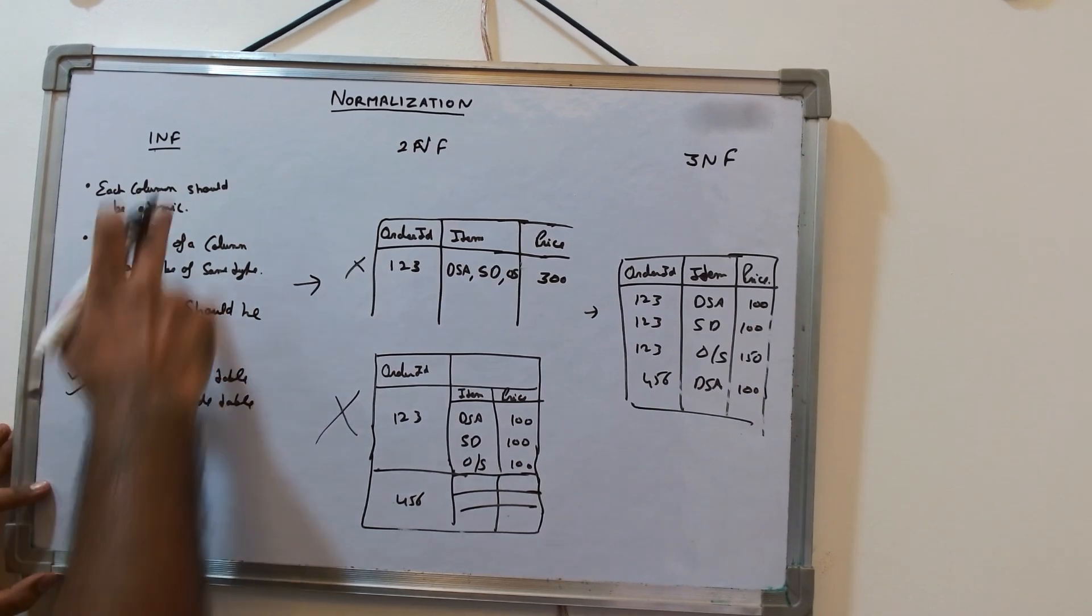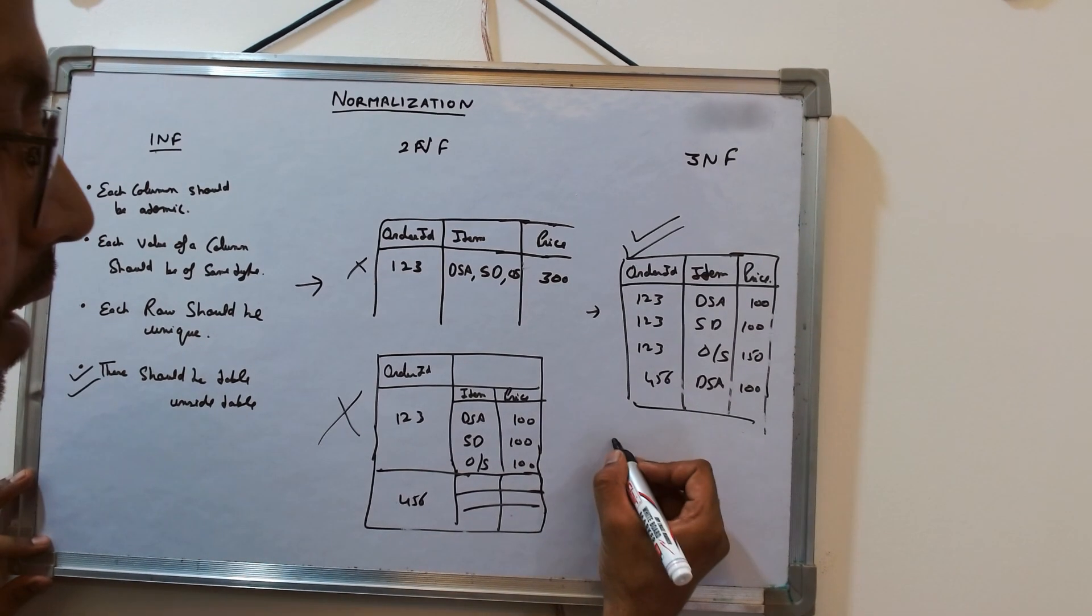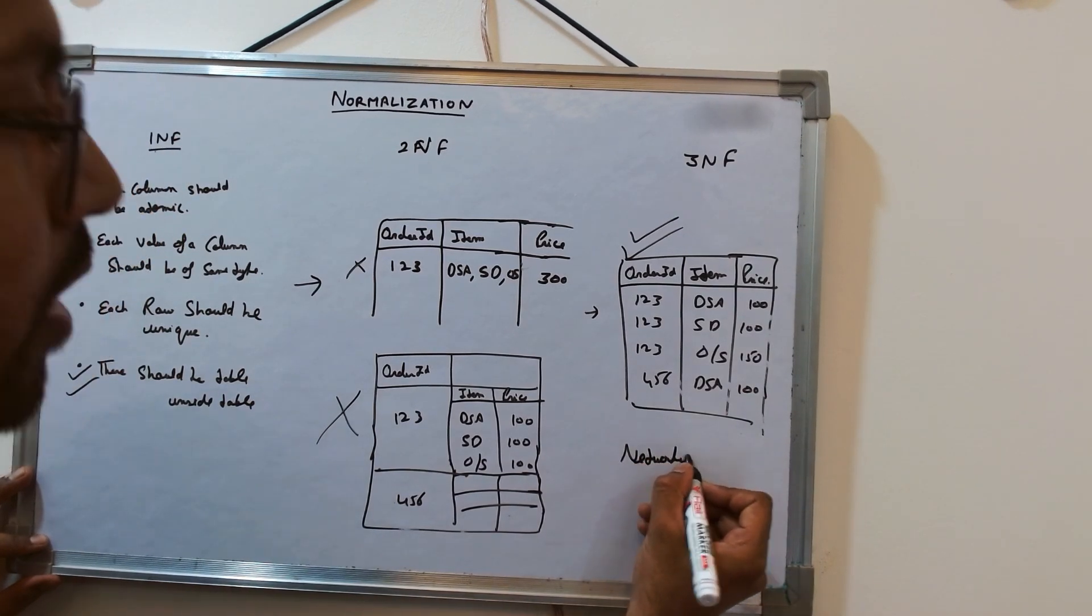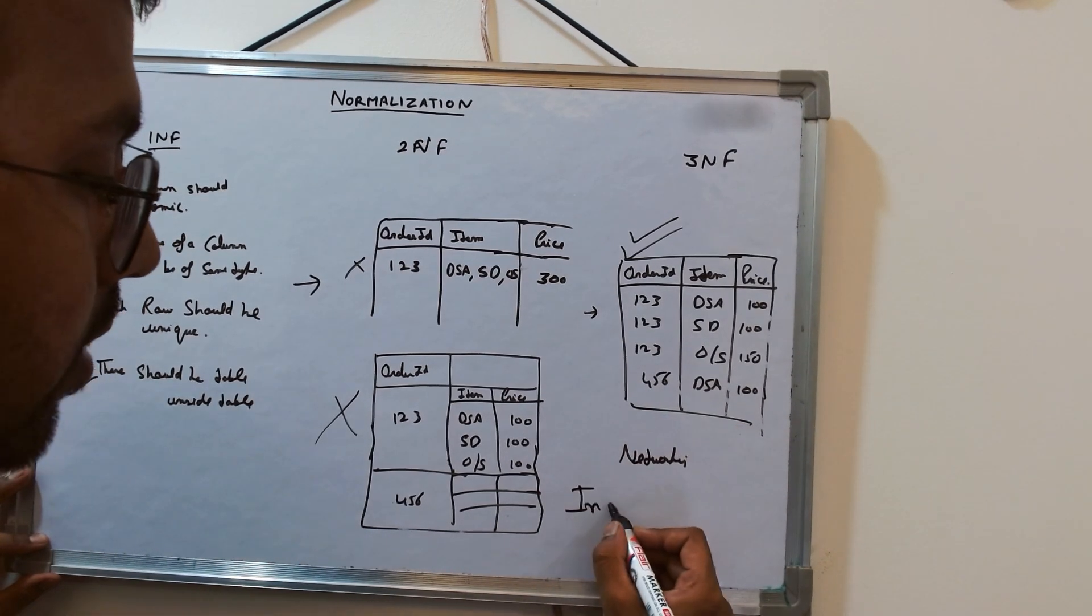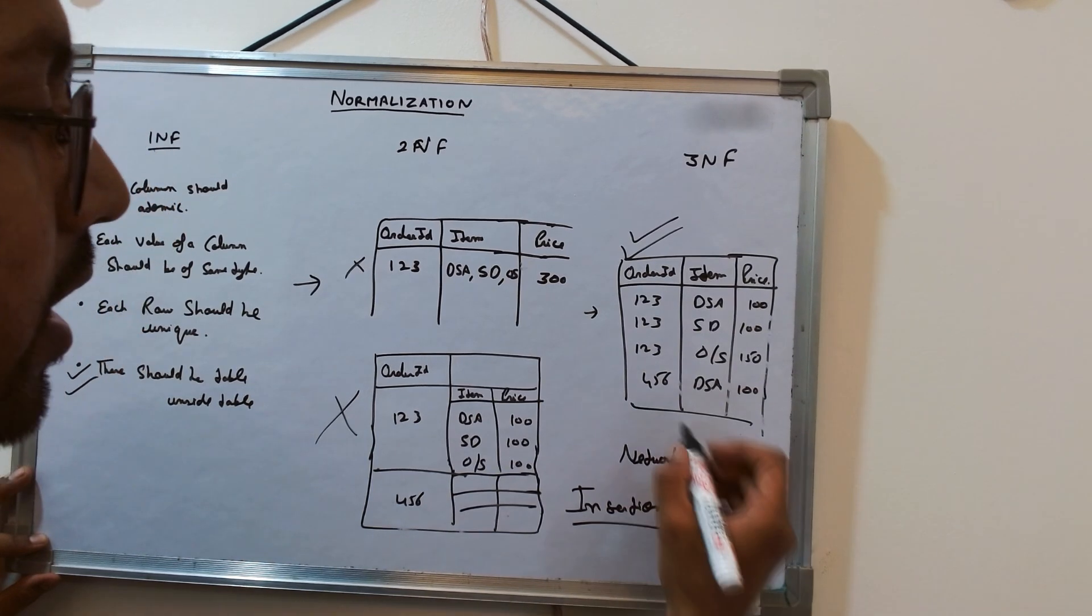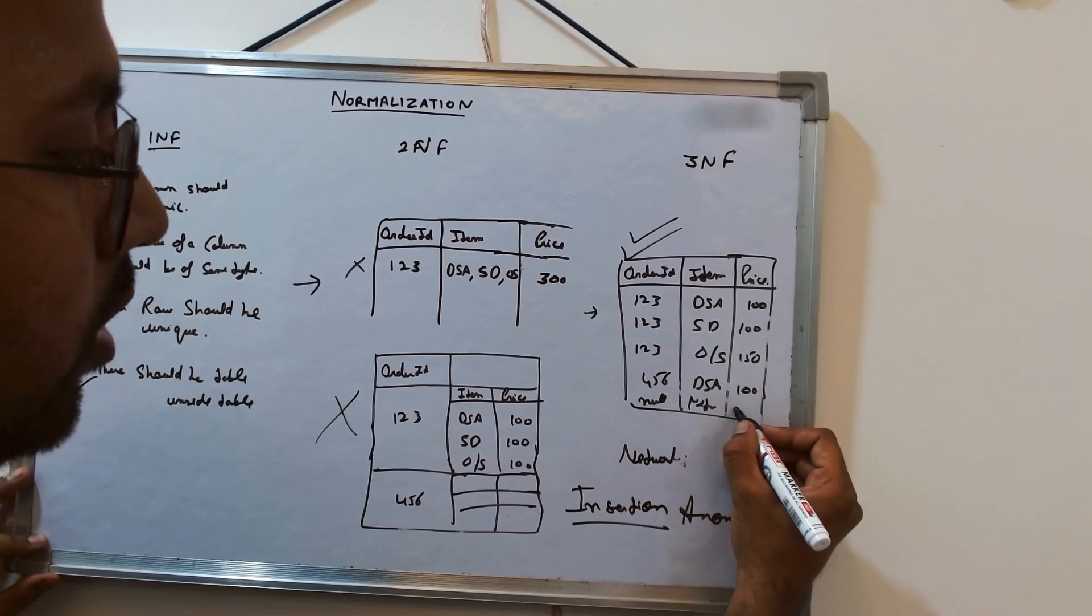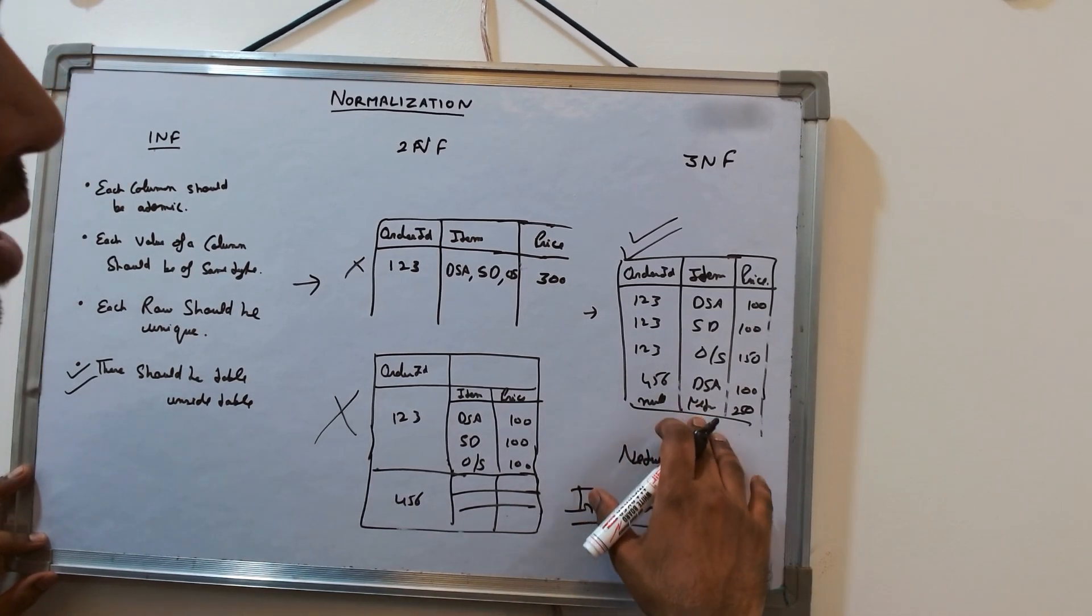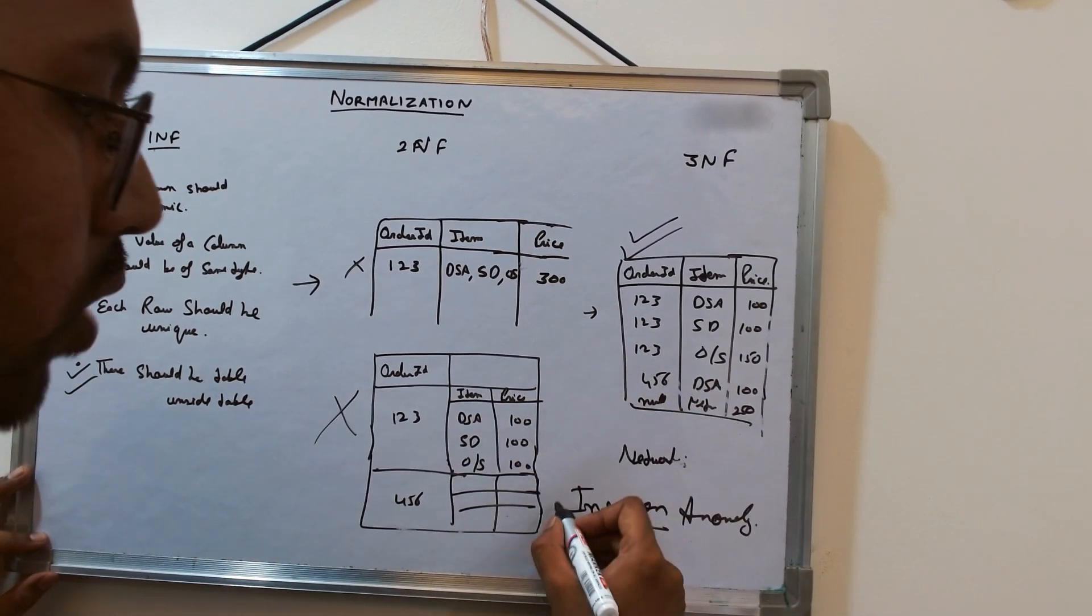But here if you see, there are multiple anomalies. If you say, can you insert another item, let's say networking? If you want to add another item into this, can you add it? So there is an insertion anomaly. In the sense that you have to put null here, you have to put networking, and here you will put the price, let's say 250. Insertion anomaly says that you would not be able to insert an item in this table until and unless you don't have an order for it.